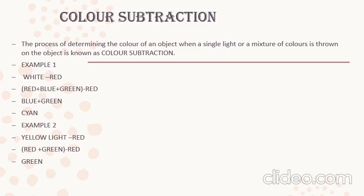So in this second example, if you throw yellow light on a red-absorbing object, you will get green color. Yellow light on a red-absorbing substance gives you green color. This is called your color subtraction.